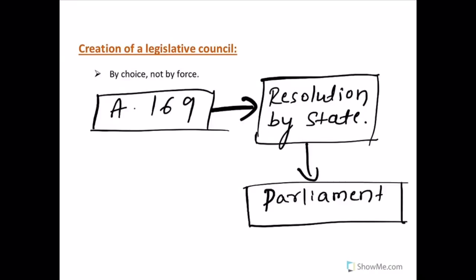First of all, let us understand how a legislative council is created. The Constitution of India has the provision of establishing bicameral legislatures in more populous states. However, for states, having a second house is not by force but by choice.